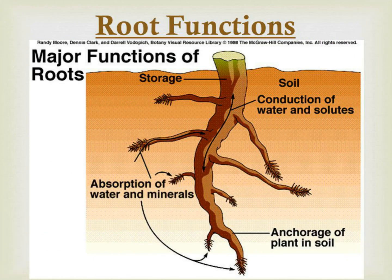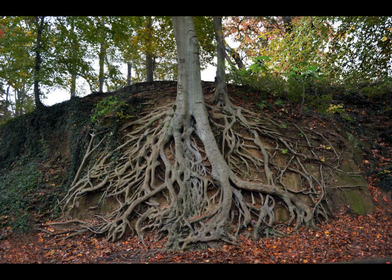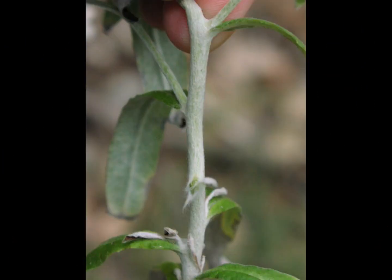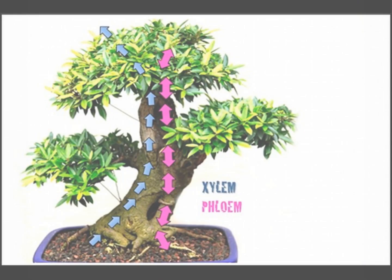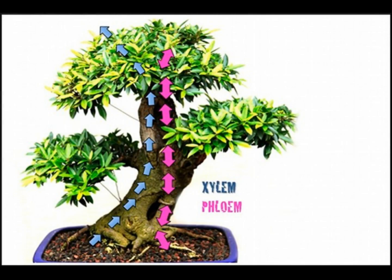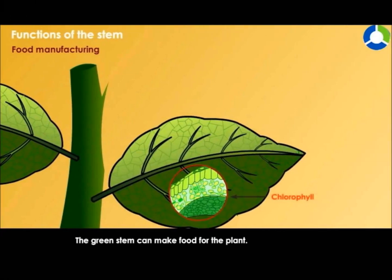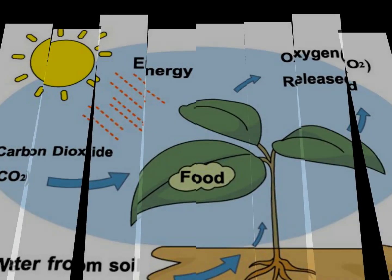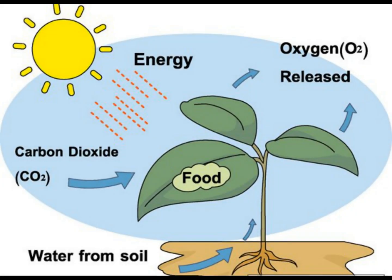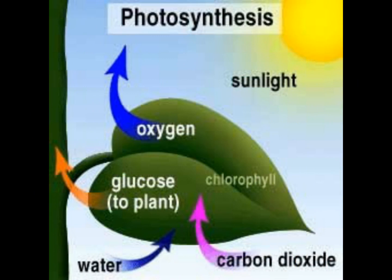The roots absorb water and minerals from the soil and anchor the plant in the ground. The stem supports the plant above the ground and carries the water and minerals to the leaves. The leaves collect energy from the sun and make food for the plant using a process called photosynthesis.